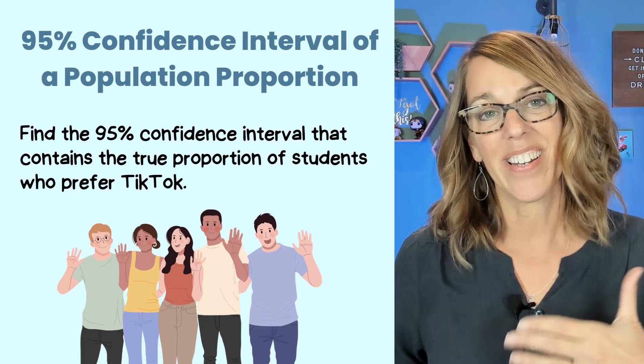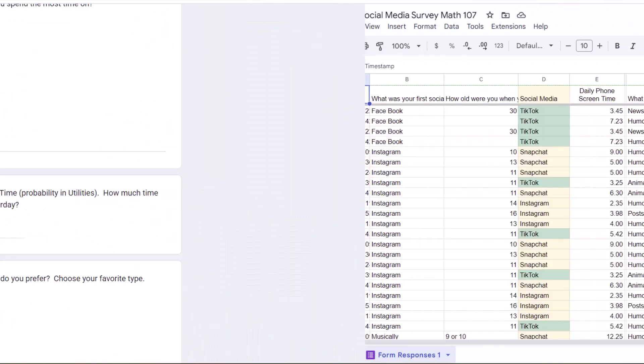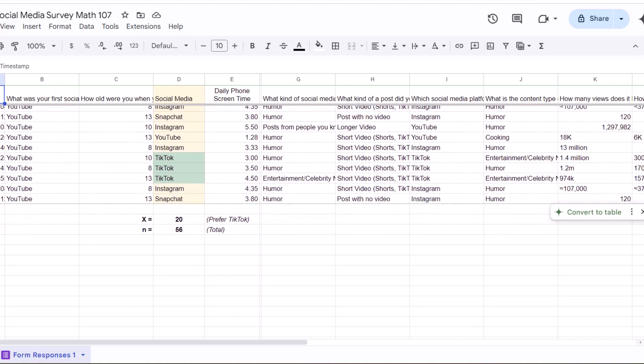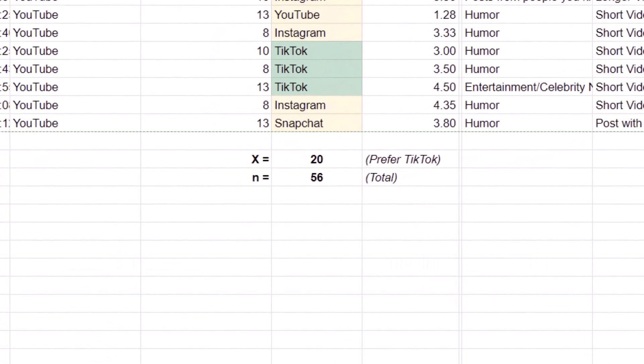So they created a survey, they collected 56 pieces of data and came up with these results. We've got an X, the number of people that like TikTok, you'll see those in green. We found 20 of those out of 56 total.